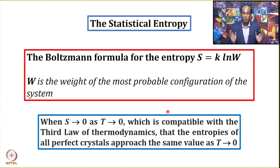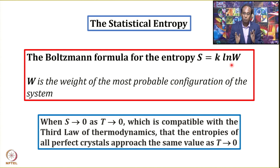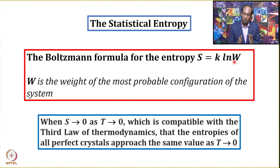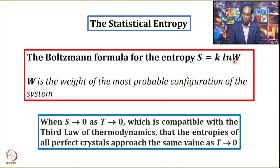Our next goal is to derive an expression connecting entropy with the weight of the most probable configuration: S equals k·log W. Before the derivation, if you look at this expression, what does it tell us? When the temperature approaches zero, all molecules are found to be in the ground state.